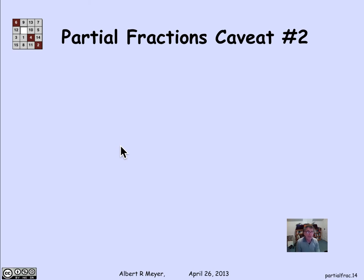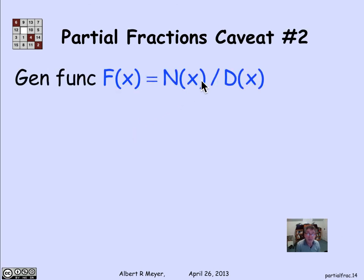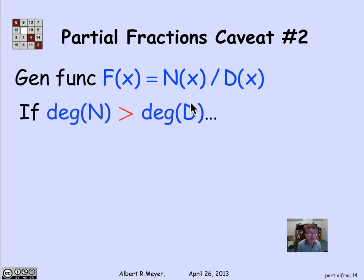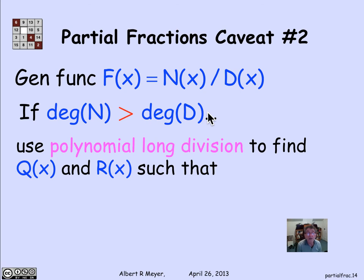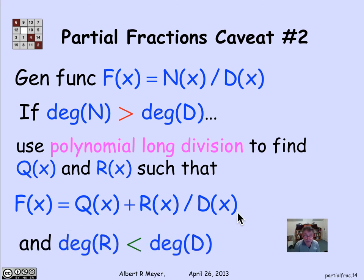The second point to be aware of when applying the partial fraction method to a quotient of polynomials is that it only works if the numerator has lower degree than the denominator. If the degree of the numerator is greater than the degree of the denominator, you do polynomial long division so that you wind up with a quotient and a remainder: f(x) = q(x) plus r(x)/d(x), where the degree of r is less than the degree of d. Then r(x)/d(x) falls to the method of partial fractions, and you add in the simple polynomial q(x) to find the coefficients of an arbitrary rational function.